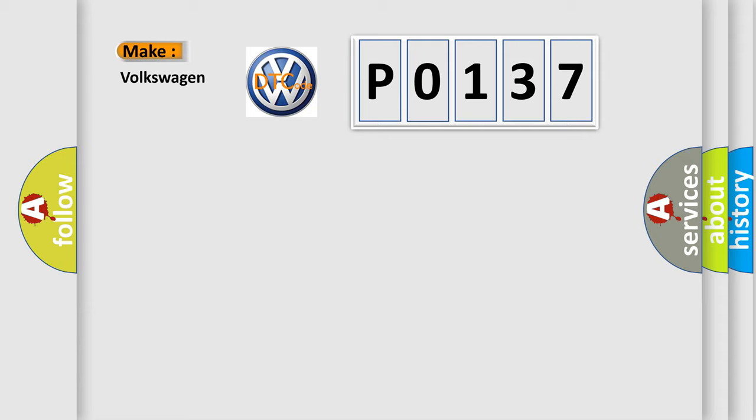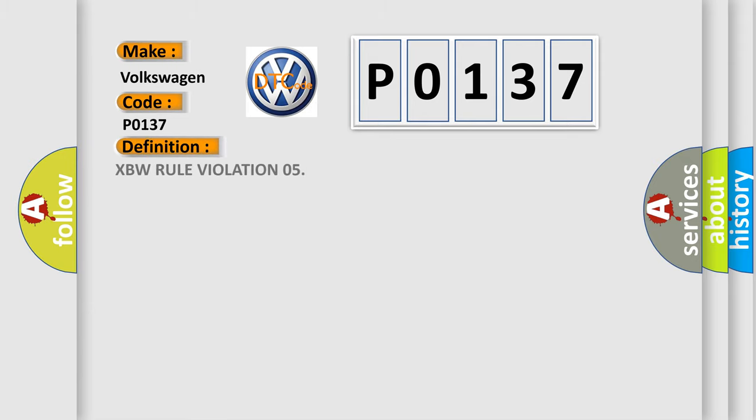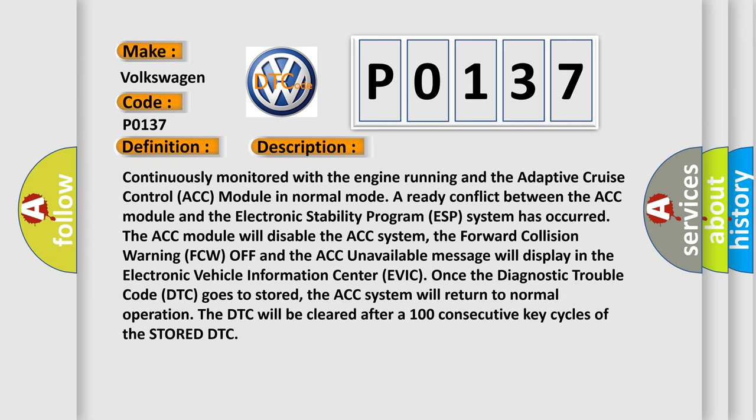What does the diagnostic trouble code P0137 interpret specifically for Volkswagen? The basic definition is XBW rule violation 05. This DTC is continuously monitored with the engine running and the adaptive cruise control ACC module in normal mode. A ready conflict between the ACC module and the electronic stability program ESP system has occurred. The ACC module will disable the ACC system. The forward collision warning FCW off and the ACC unavailable message will display in the electronic vehicle information center EVIC. Once the DTC goes to stored, the ACC system will return to normal operation. The DTC will be cleared after 100 consecutive key cycles of the stored DTC.